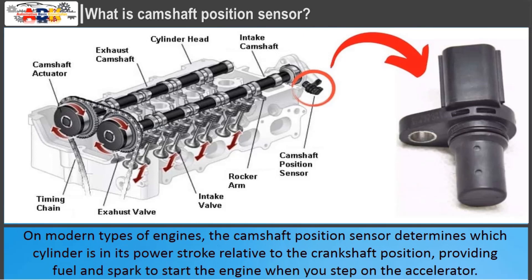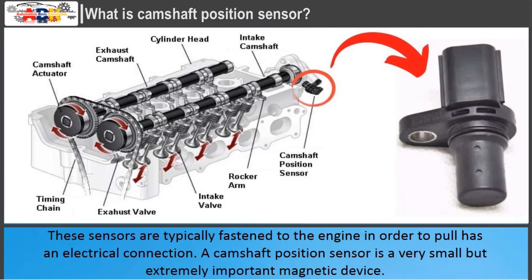On modern types of engines, the camshaft position sensor determines which cylinder is in its power stroke relative to the crankshaft position, providing fuel and spark to start the engine when you step on the accelerator. These sensors are typically fastened to the engine and have an electrical connection. A camshaft position sensor is a very small but extremely important magnetic device.